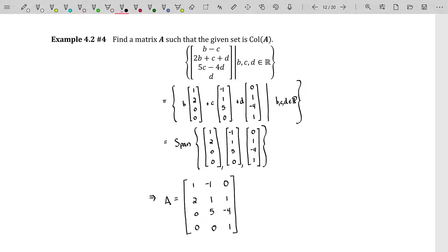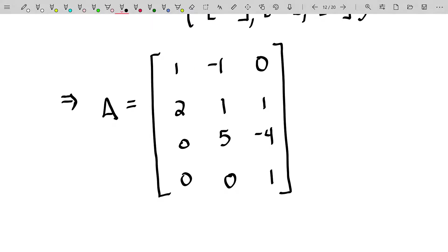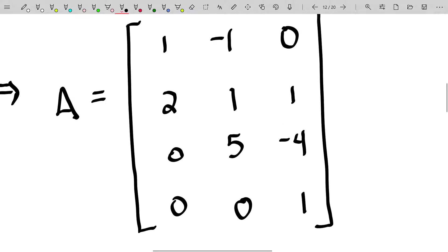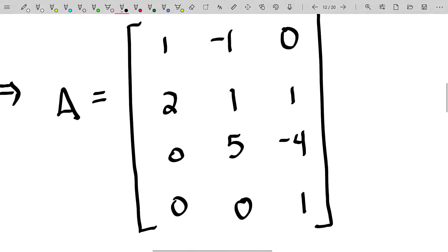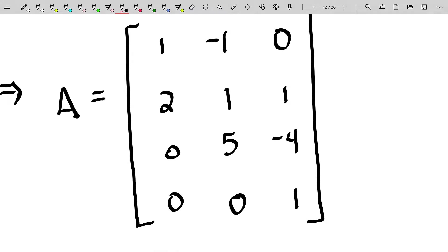So the column space of A is somewhat easy to write down explicitly. If somebody hands us a matrix, I can quickly write down the column space of A. If they handed me this matrix, I would say the column space is the span of those three columns. Done. Whereas the null space of a matrix requires you to solve Ax equals zero, so there's a bit of work to do that. I will summarize that later.